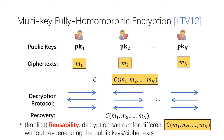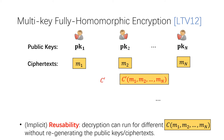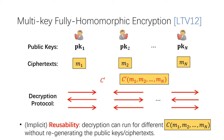We want to emphasize that there is implicit reusability, which means the decryption protocol can run for different homomorphically evaluated ciphertexts without regenerating the public keys or the ciphertexts. For example, if there is another circuit C', and we obtain a homomorphic evaluation of C' over these ciphertexts, then to decrypt, all these parties only need to do another decryption protocol and recover the output of C'. They don't need to generate new public keys or ciphertexts.